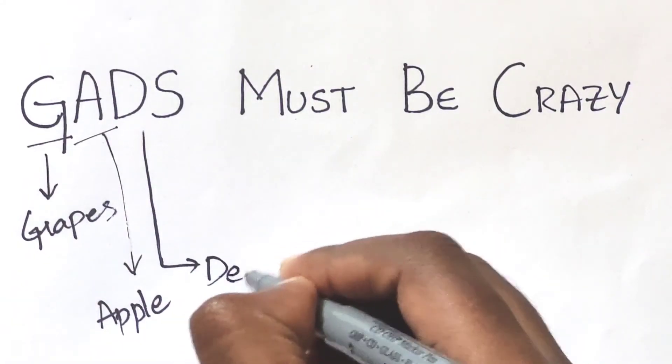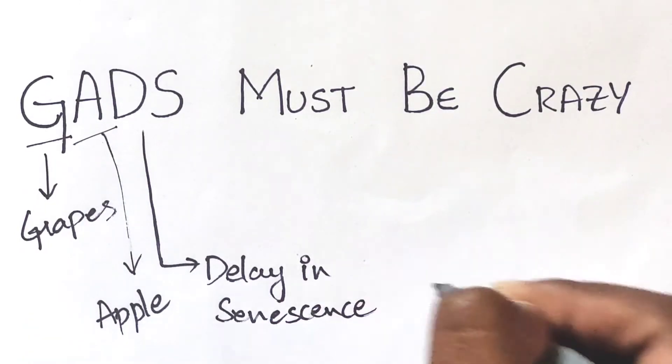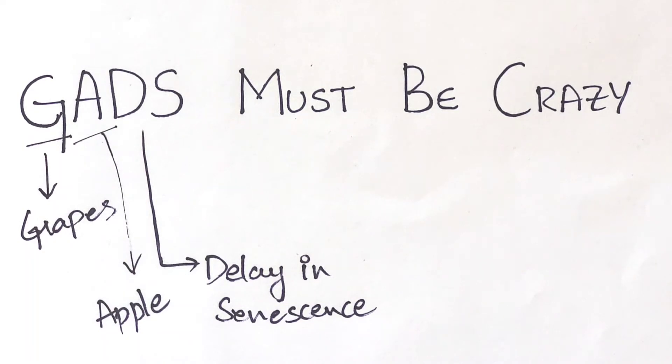D for delay in senescence. Senescence means old age. If we delay the old age, yield of fruits will be more and we can sell them for long period in the market.